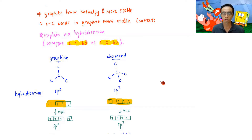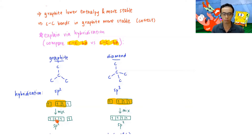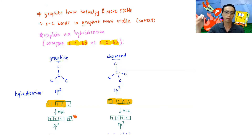We need to bring in hybridization and the concept of %S character. For graphite, the carbon is sp2 hybridized because each carbon is attached to three other carbons via sigma bonds. Mixing one s orbital and two p orbitals gives three sp2 hybridized orbitals used in sigma bond formation. The remaining unhybridized electron in the 2pz orbital is involved in delocalization between graphite layers.